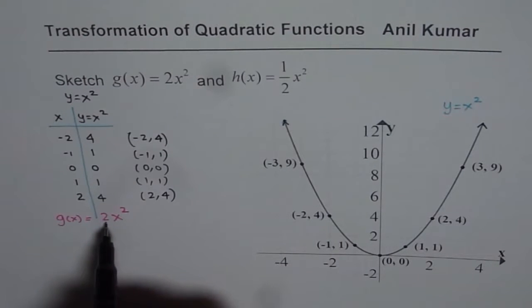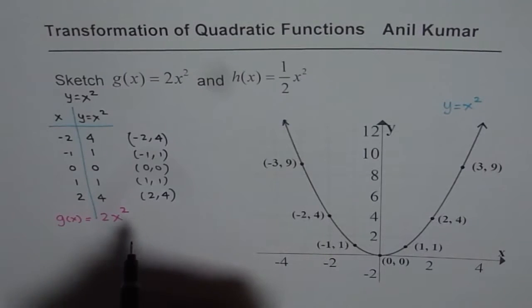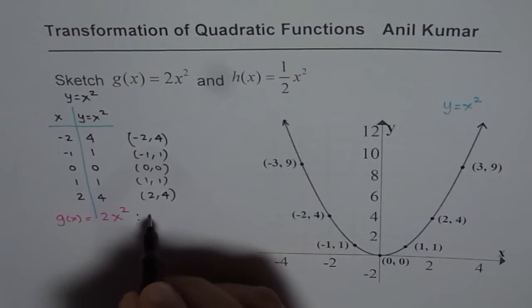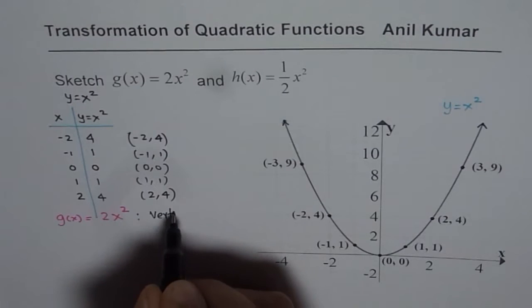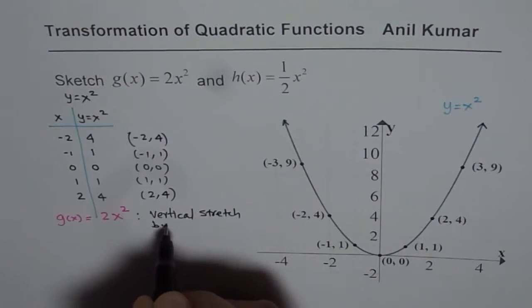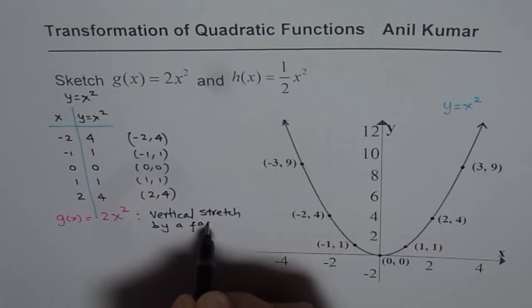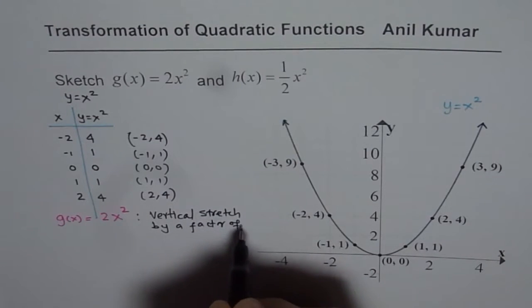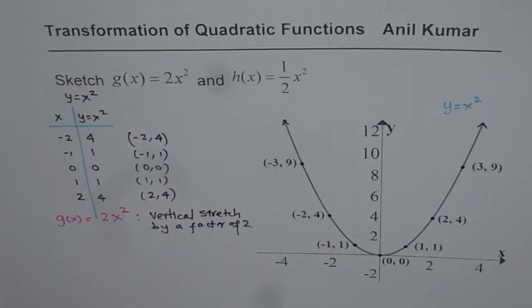So y values are multiplied by 2. Type of transformation is vertical stretch by a factor of 2. That is the transformation.